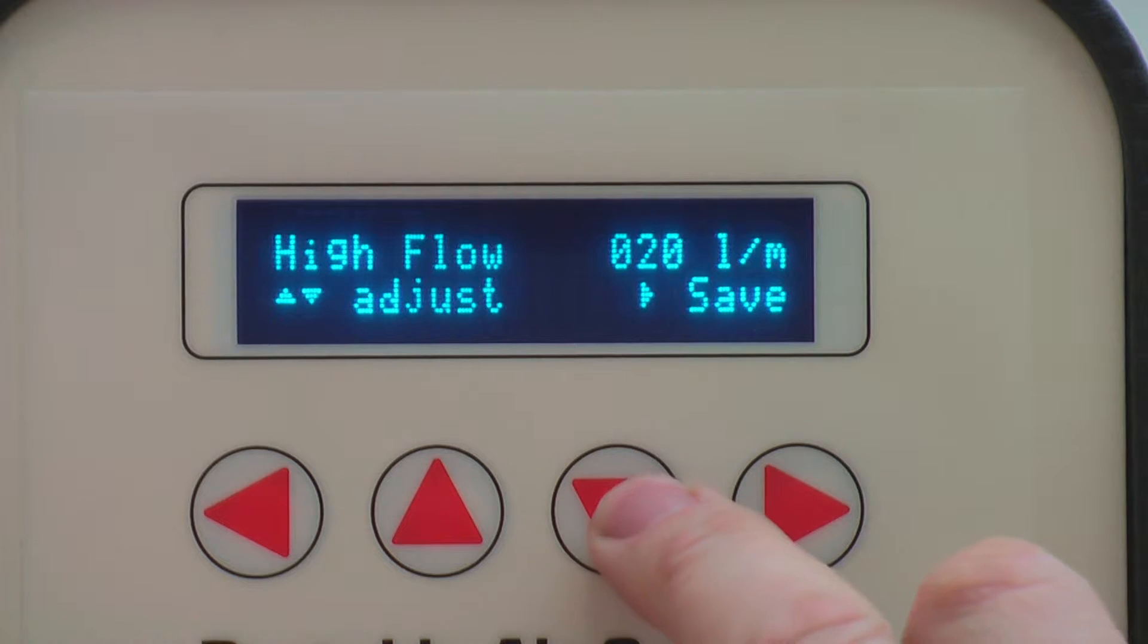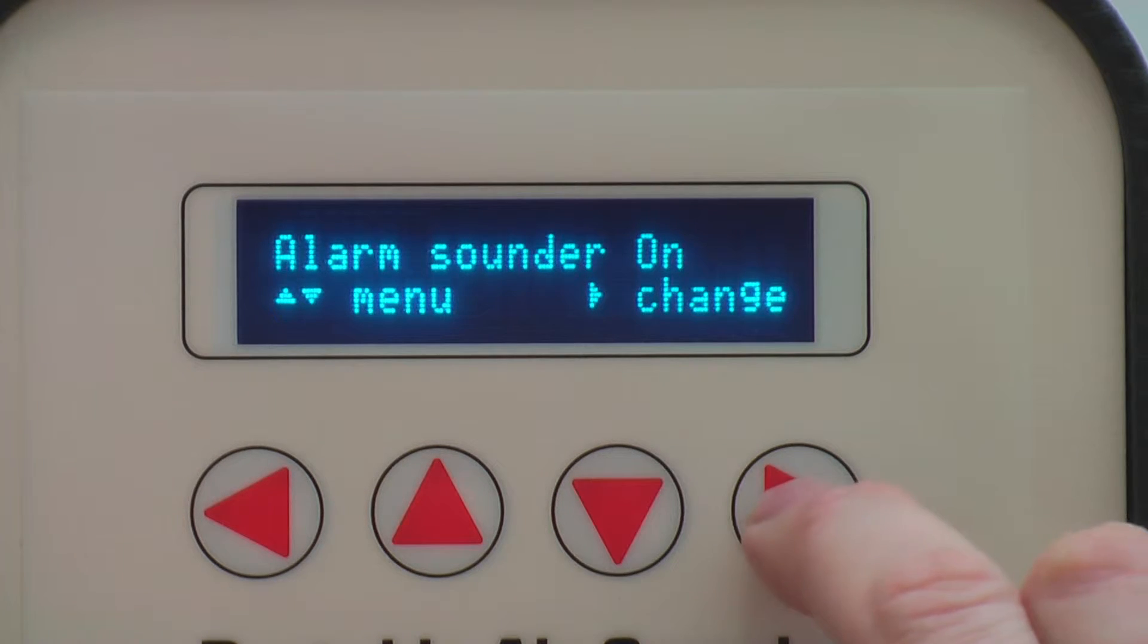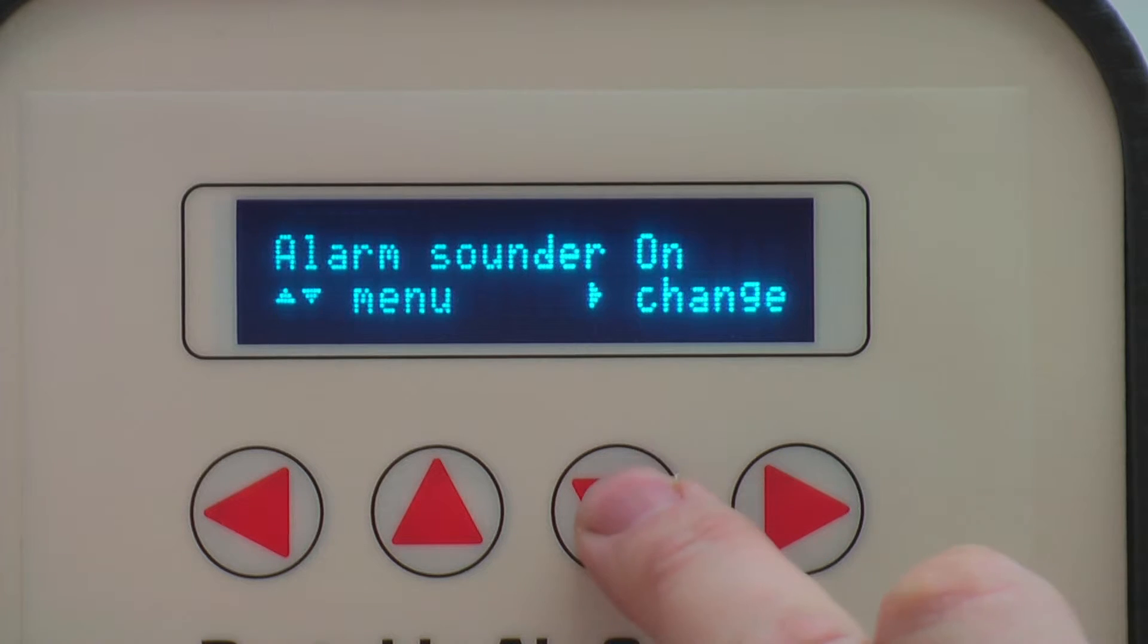You can choose whether you want the alarm to be silent or activate a buzzer when alarm criteria has been breached. Press right to change the settings, up and down to turn the alarm on or off. Pressing right again will save the new configuration.